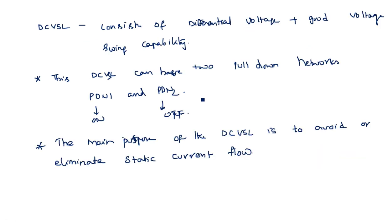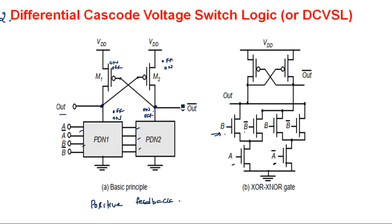That is why DCVSL is designed so that M1 and M2 will not be on at the same time, and pull down network 1 and pull down network 2 are also not on simultaneously. For example, if the output on the left is assumed to be 0, that 0 passes to the input of M2 and M2 turns on, while the output bar is 1, which is connected to M1 and keeps it in the off state.